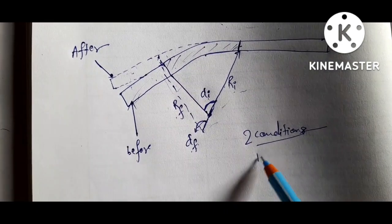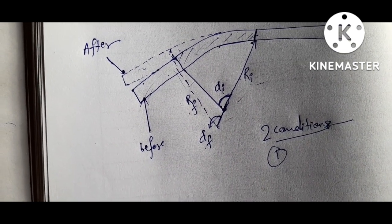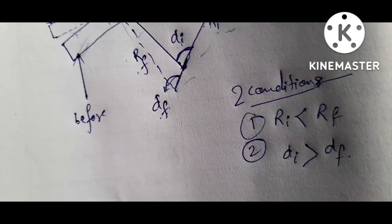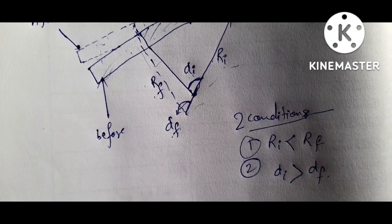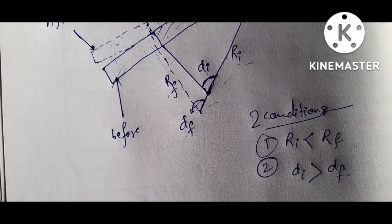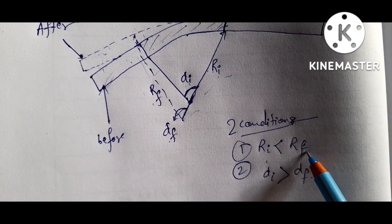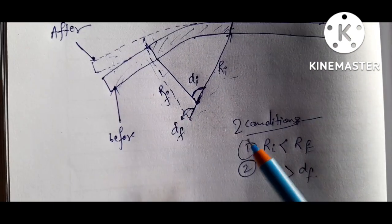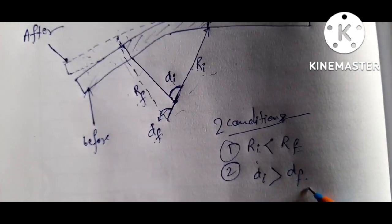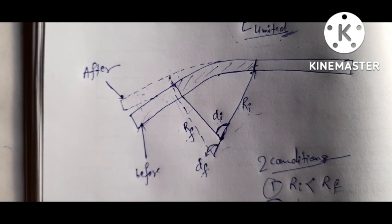Spring back happens under two conditions. First, the final bend radius is larger than the radius to which it was bent. Second, the final bend angle after spring back is smaller than the angle to which it was bent. So if ri is less than rf, there is spring back. Also, if the initial bend angle alpha i is greater than the final bend angle, that is also a case of spring back.